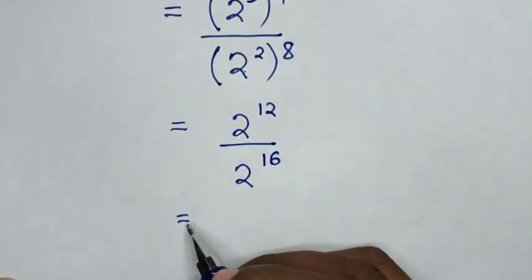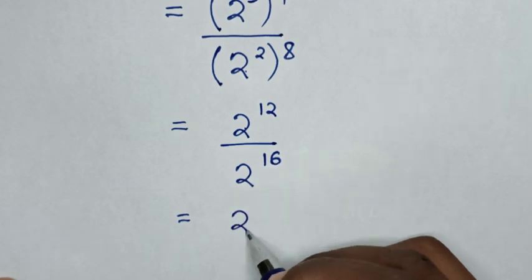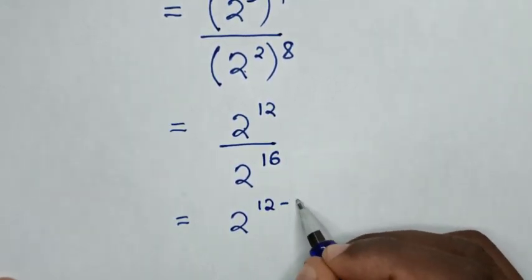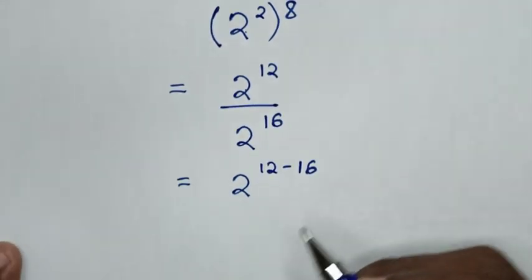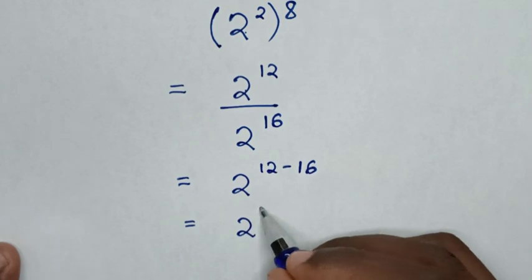Then it will be equal to, in here as division of exponent with same base, so it will be 2 power of 12 minus 16, which is equal to 2 power of negative 4.